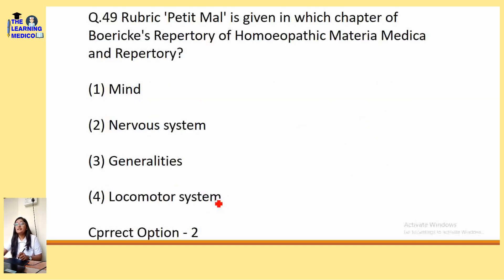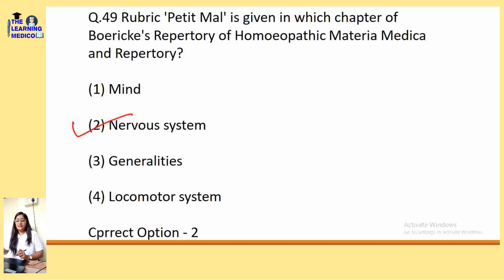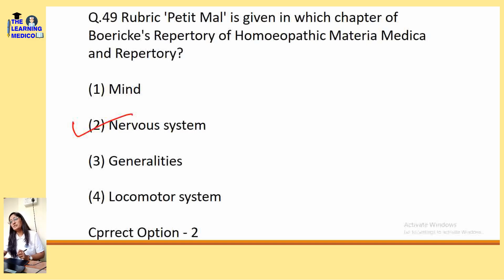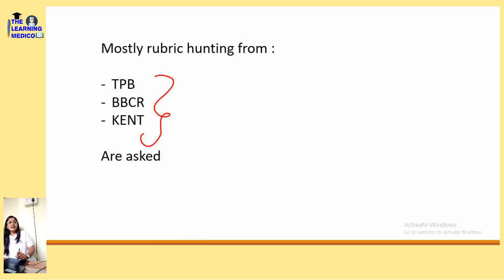The rubric 'Petit Mal' is given in which chapter of Boericke's Repertory Homeopathic Materia Medica? It is given in the nervous system. Questions are usually asked from Boericke — Boericke actually came from 2, and Erotic Pain also came from Boericke. They have considered both Boericke Repertory and Boericke Materia Medica. If you like BBC, RTPP, and Kent, I think you should stick to one.